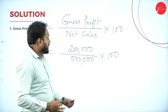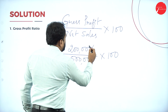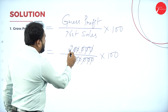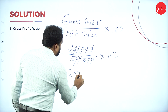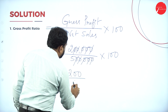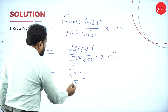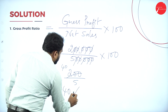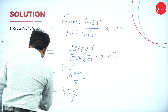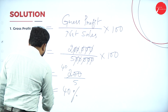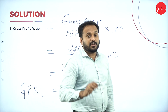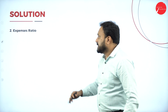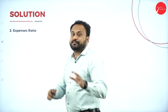So the calculation is 2 lakh divided by 5 lakh, into 100. That gives us 2 into 100 = 200, divided by 5 = 40. So Gross Profit Ratio is equal to 40%. The business is doing well, as we can understand from this. Let's go with the next one — Expenses Ratio.